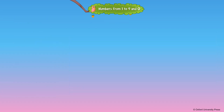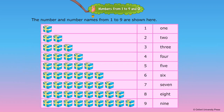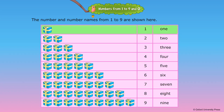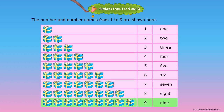Number names from one to nine. The number and number names from one to nine are shown here. One, two, three, four, five, six, seven, eight, nine.